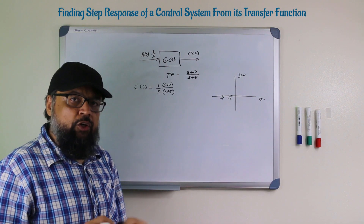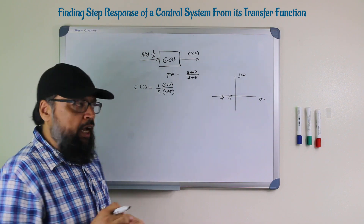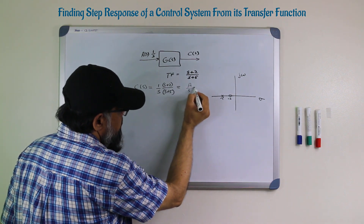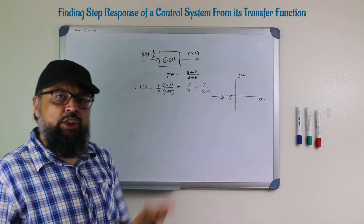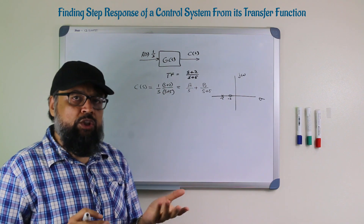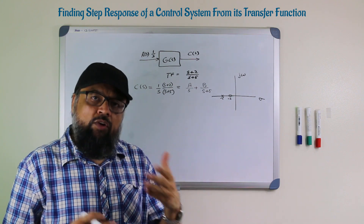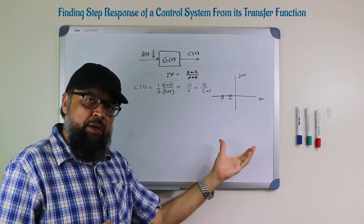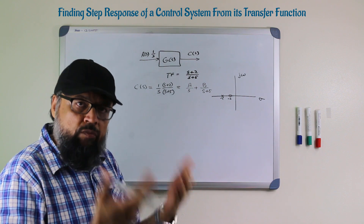This is a polynomial fraction and in order to go from the s-domain to the time domain, we use partial fractions and decompose this into two smaller fractions: a divided by s, plus b divided by (s plus 5). These are the constants we have to find. As you will see at the end of this video, you don't have to find these constants — without finding them, you can write down the form of the output response just by inspection of the transfer function.